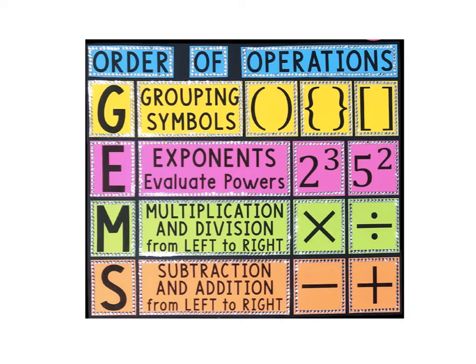First step is our grouping symbols. Check your problem. Does it have any parentheses, braces, or brackets? Second, are there any exponents that you need to solve? Third, look for multiplication and division in the equation and work from left to right. Last but not least, subtraction and addition. Again, you work from left to right as you solve those problems.